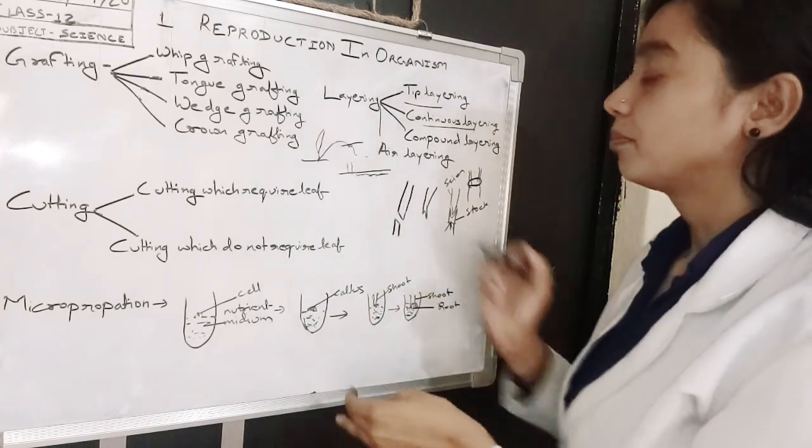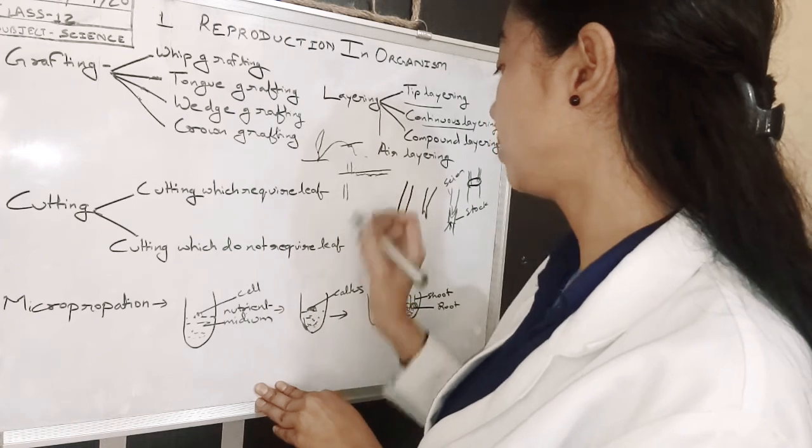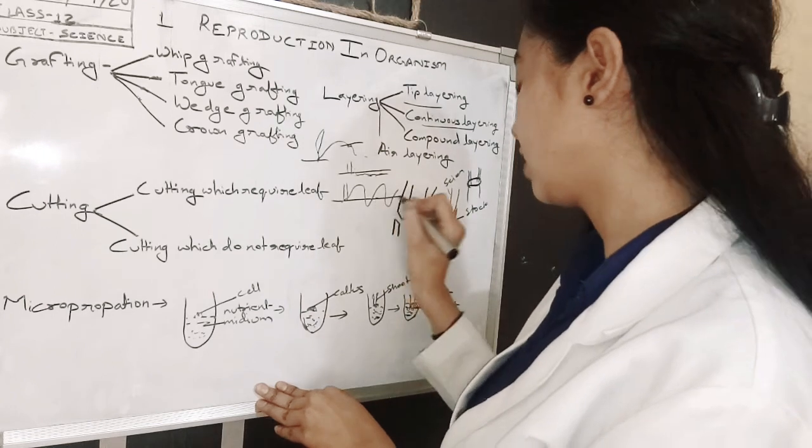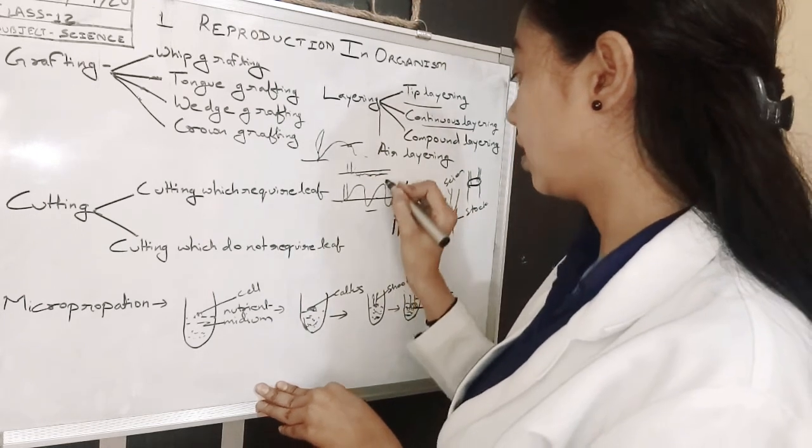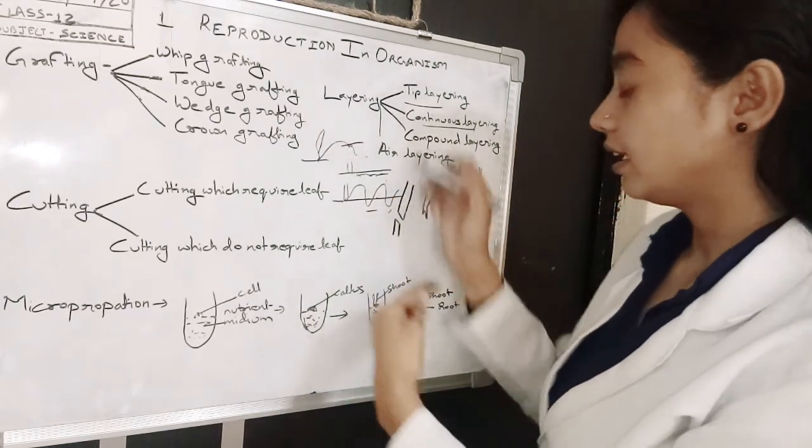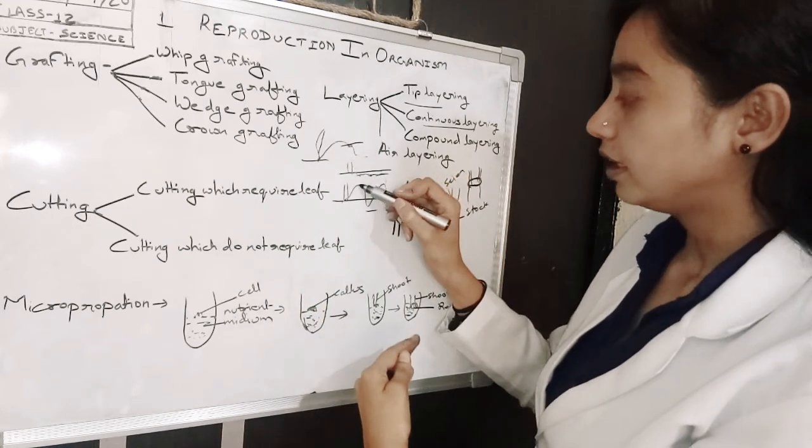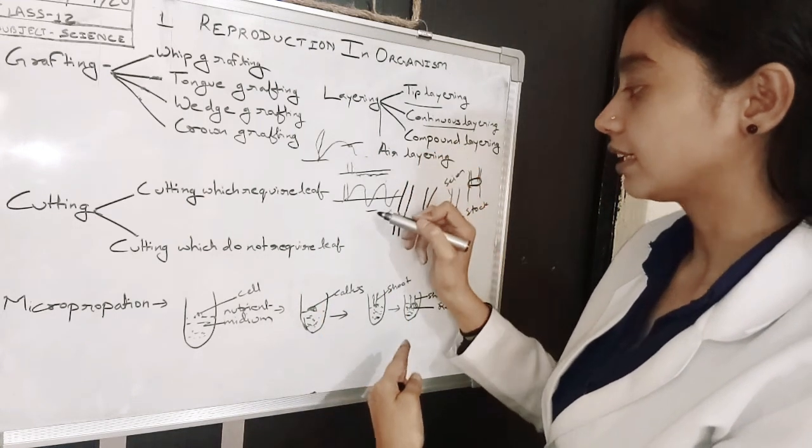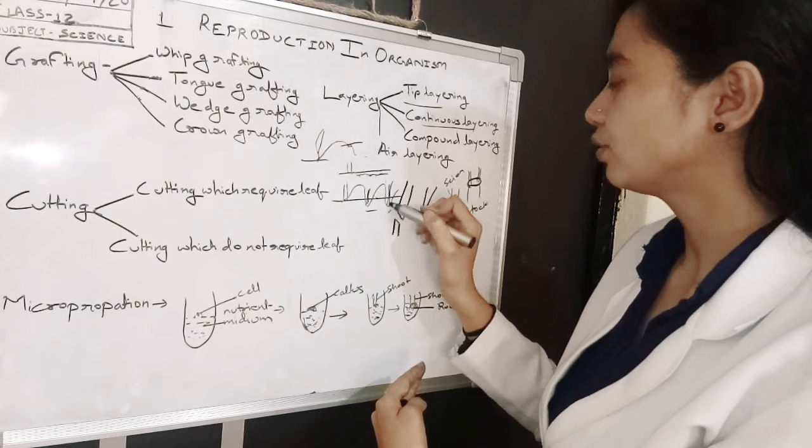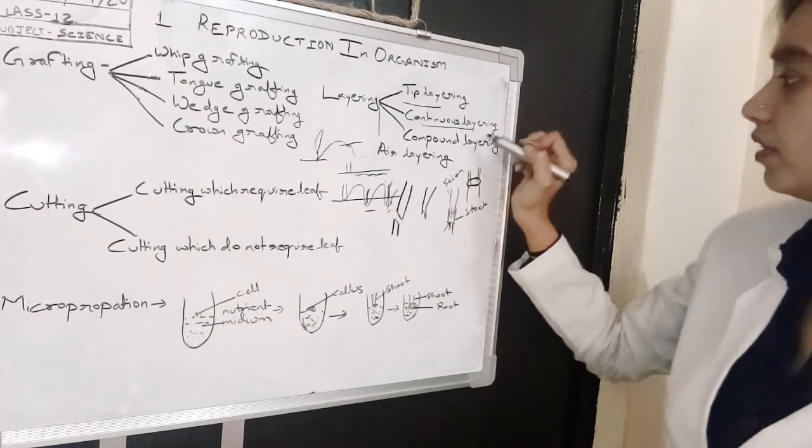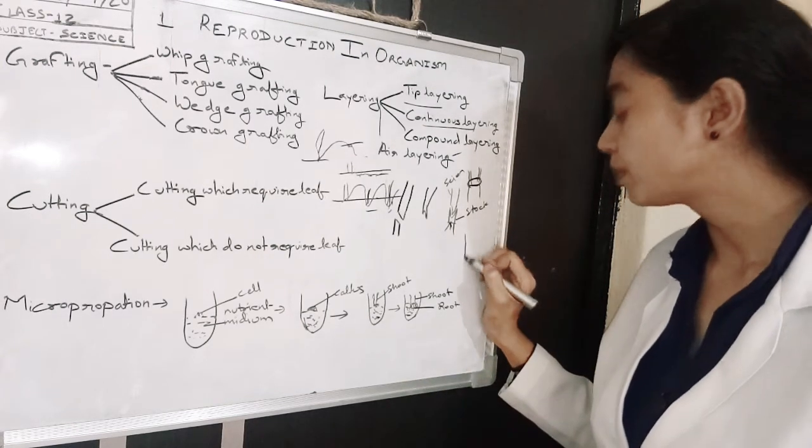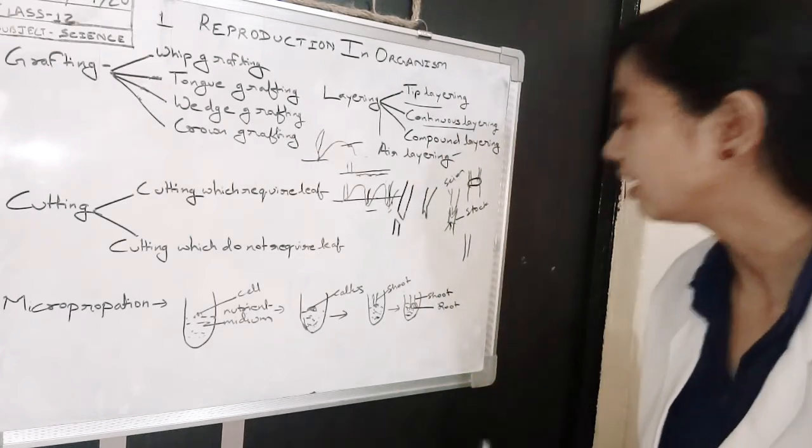Compound layering is a type in which you take the branch in this manner - part above and part inside the soil. The branch is partly outside in the atmospheric region and partly in the underground region, and from there a new plant arises. Air layering occurs in trees whose branches cannot be pulled down inside the earth underground.